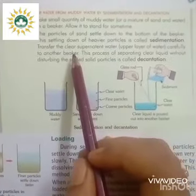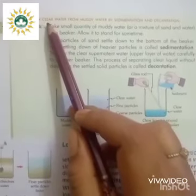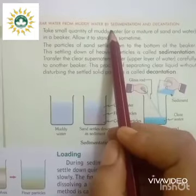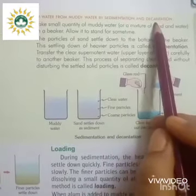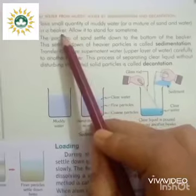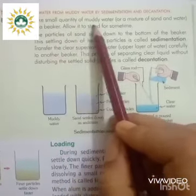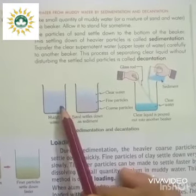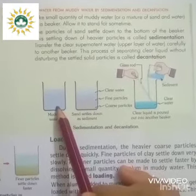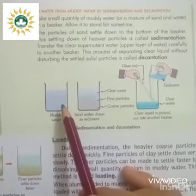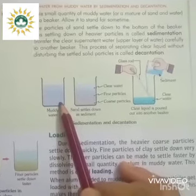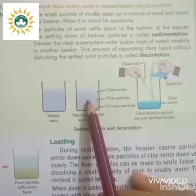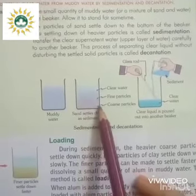A small activity in your book shows how to obtain clear water from muddy water using sedimentation and decantation. First, take a small amount of muddy water — a mixture of sand and water — in a beaker. Allow it to stand for some time and you will see that the particles of sand settle down to the bottom of the beaker.